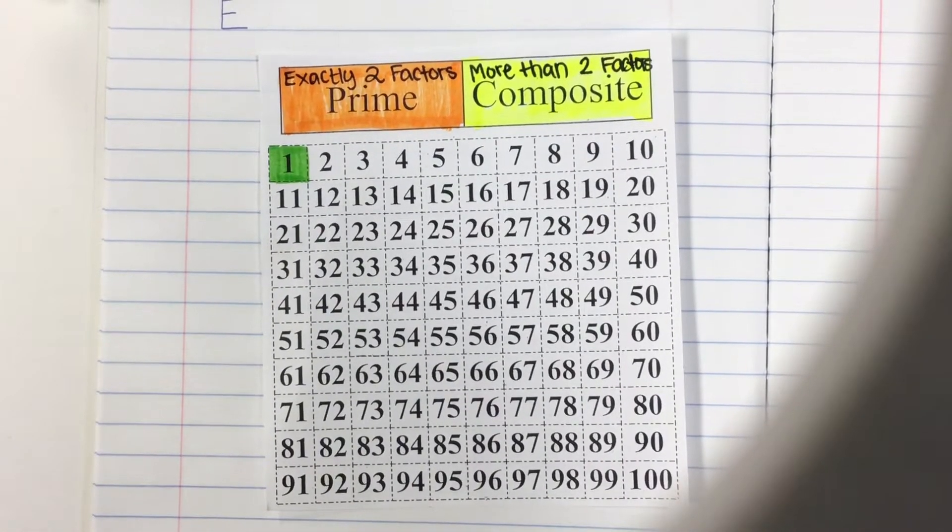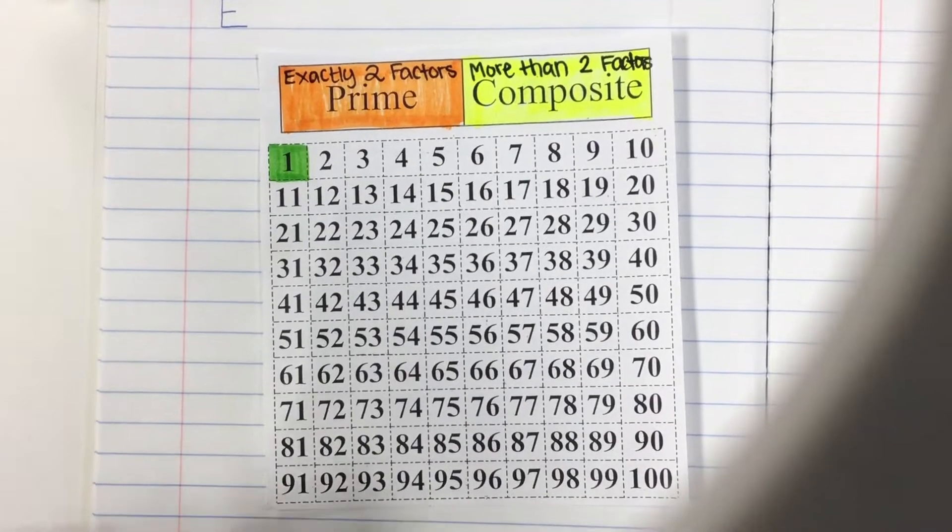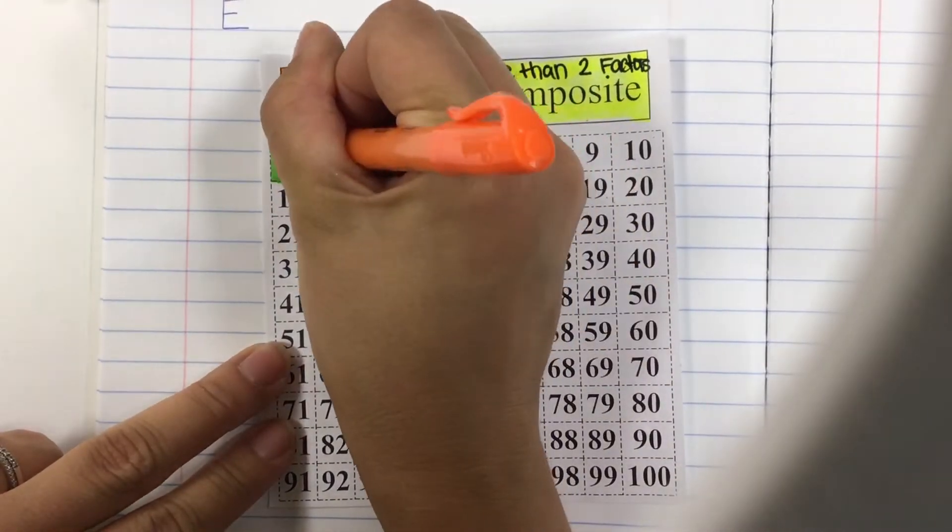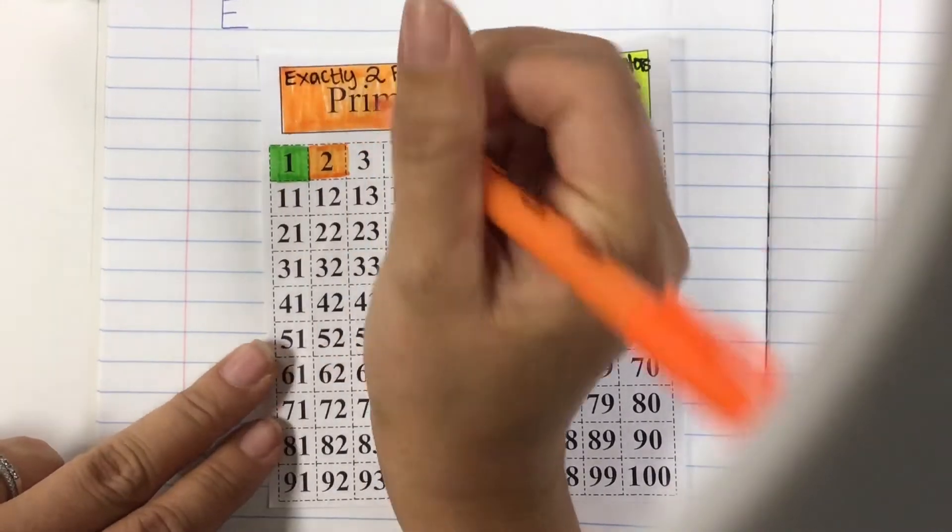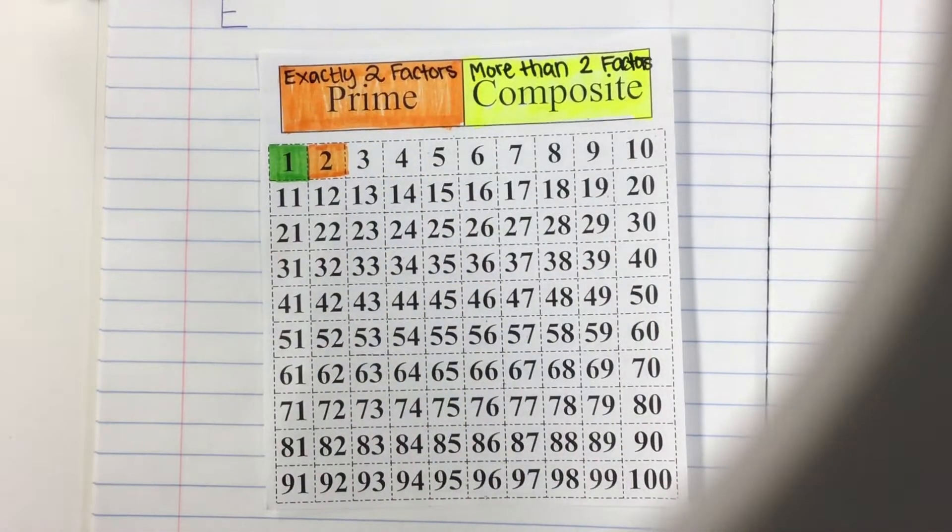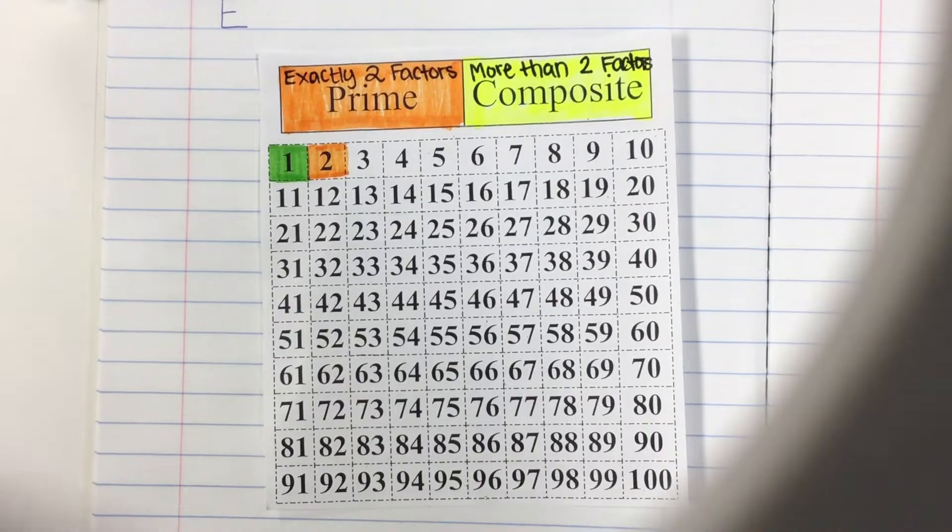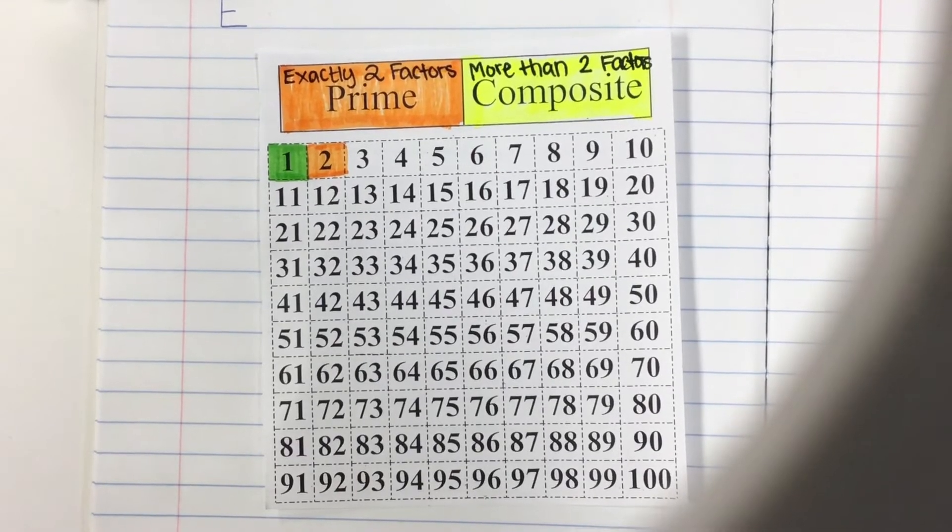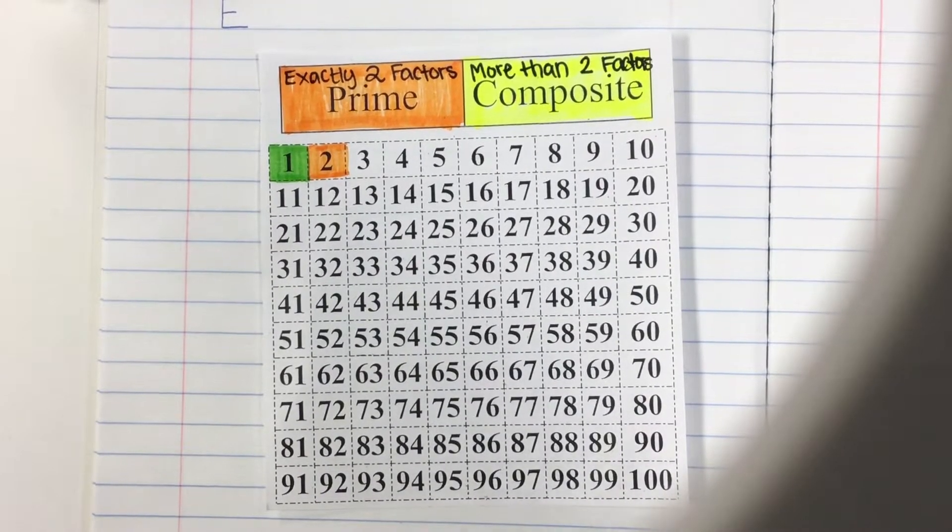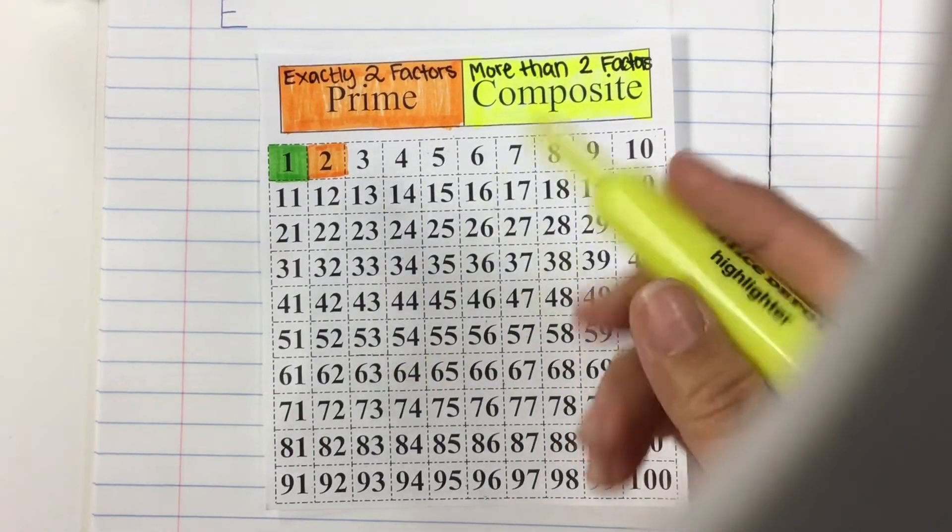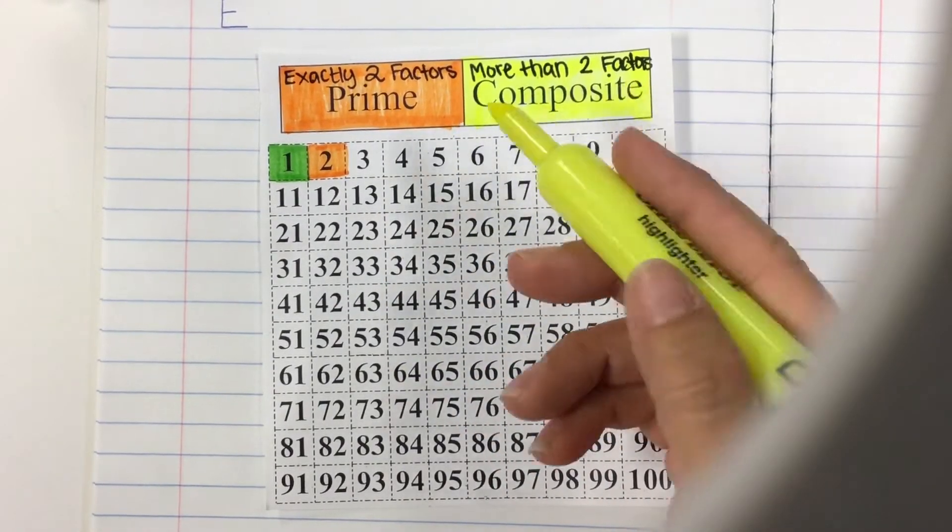Go ahead and grab your prime color. Mine's orange and I'm going to fill in two with this color. Two is the only even prime number. That's because every other number that's even has a factor of two as well as one and itself. So we are going to get rid of or highlight everything else.